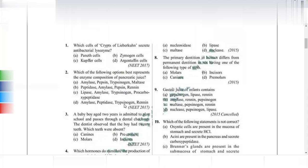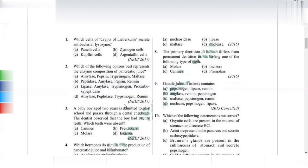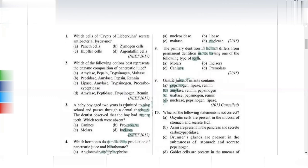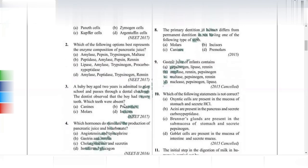The primary dentition in humans differs from the permanent dentition in not having pre-molars. That is the only difference between primary and secondary dentition.